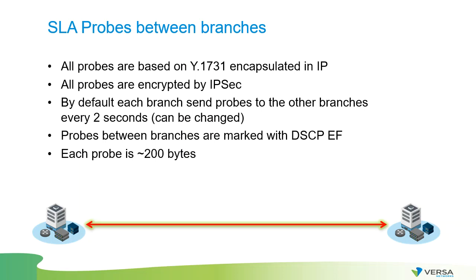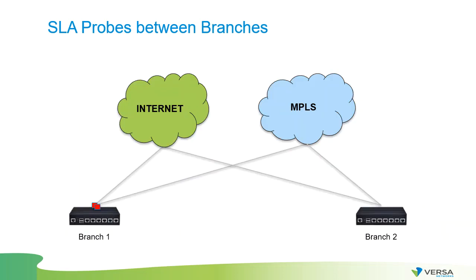Each probe that the branches will be sending to each other is approximately 200 bytes in size. By default — with the default configuration that can be changed later — we are sending probes every two seconds. Branch one will be sending probes to branch two every two seconds, and at the same time will receive the reply from branch two back.